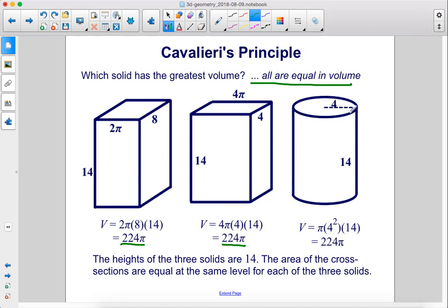And over here, we have the area of the circular base, which is pi times four squared times the height, fourteen, and that's also 224 pi. The heights of the three solids are fourteen. The area of the cross sections are equal at the same level for each of the three solids.